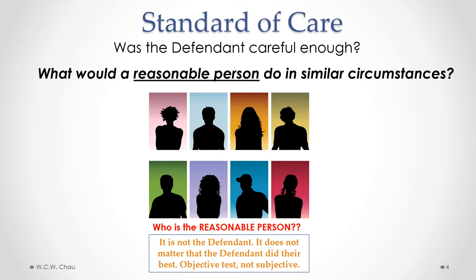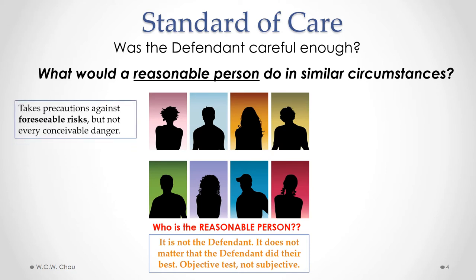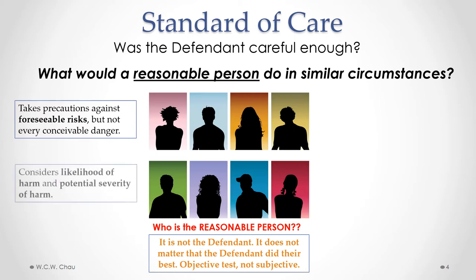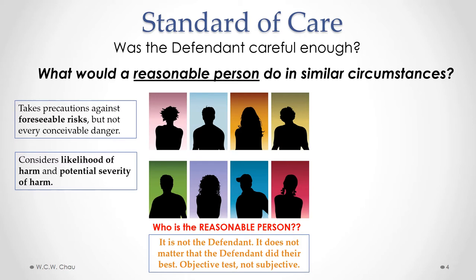In determining what a reasonable person would do in similar circumstances, courts have given us some guidance. Courts have said that a reasonable person takes precautions against foreseeable risks, but not necessarily precautions against every conceivable danger. A reasonable person also considers the likelihood of harm and the potential severity of harm — how likely is something to go wrong, and how severe will the consequences be?